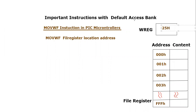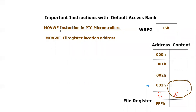Let's say we have already put 25H inside the working register using that command, and now we want to move this content into the file register. We want to move it to location 003H. So we use the MOVWF instruction and mention the address of this location, which is 003H.